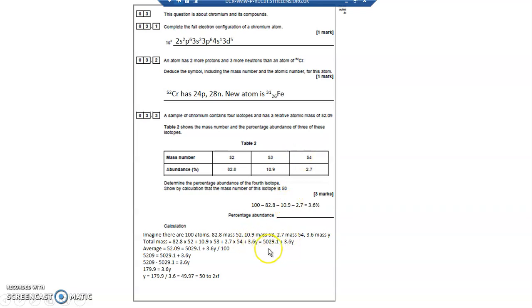So an average is the total mass divided by the number of particles. And this is where your 100 atoms comes in. So that's the total mass. Divided by 100 gives me the average. Now I know what the average is, it's 52.08. So 5,029.1, add 3.6Y, divided by 100, which is my average, equals 52.09 from here.